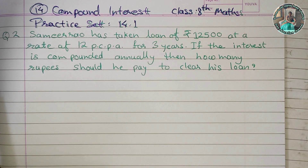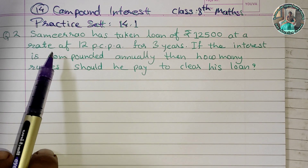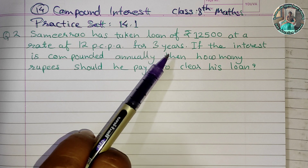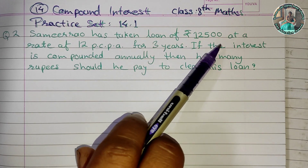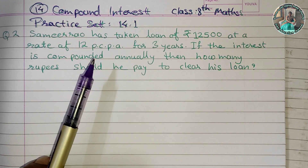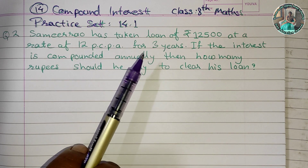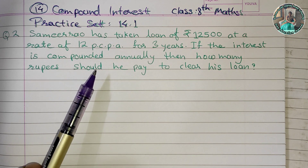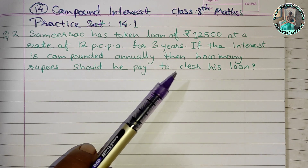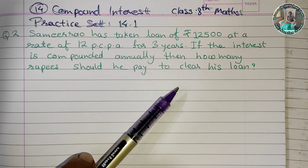Check out the 8th Standard Mathematics playlist. Question 2: Samir Rao has taken a loan of Rs. 12,500 at a rate of 12% per annum for 3 years. If the interest is compounded annually, then how many rupees should he pay to clear his loan?